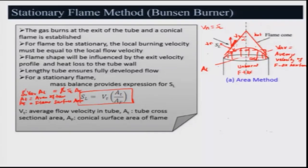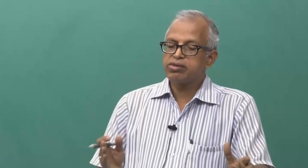So A_F is the conical surface area of the flame, which can be obtained from photographs. Nowadays people use image processing to find this conical surface area of the flame. Earlier, people measured it from still photographs. This is one of the cruder methods, but it gives usable values. Unlike the previous sophisticated method, this area method is relatively crude.